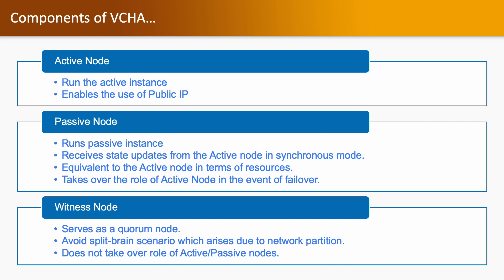Components of VCHA: we have active node, passive node, and witness node. The active node runs as the active instance and enables the use of the public IP interface. You have two vCenter servers — one running as active, another running as passive. The active node is the active instance of that vCenter server, and when you access that vCenter server it will go to the active server.